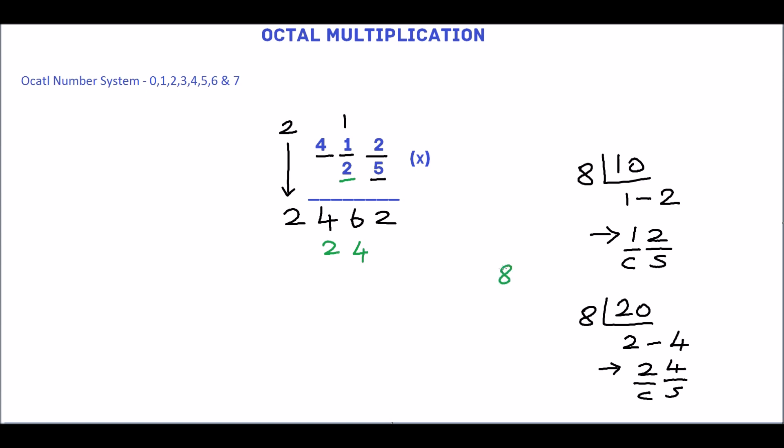8 is not an octal. We will convert this 8 into equivalent octal number. Divide this 8 by 8. The quotient is 1 and the remainder is 0. So the equivalent octal number is 10. We will write 10 here.